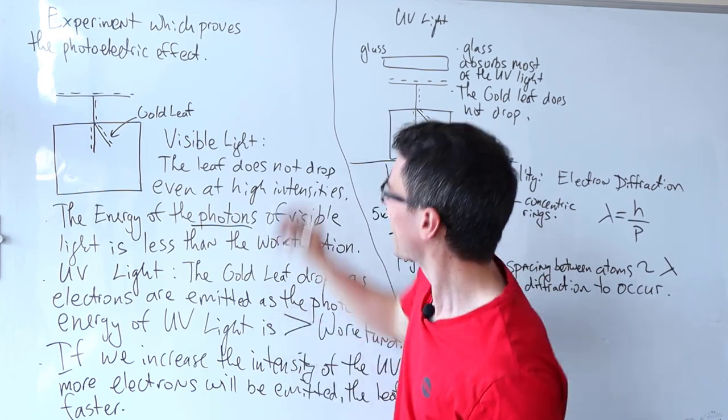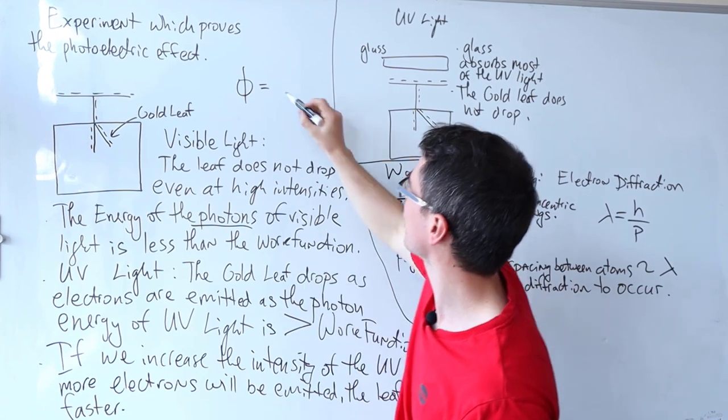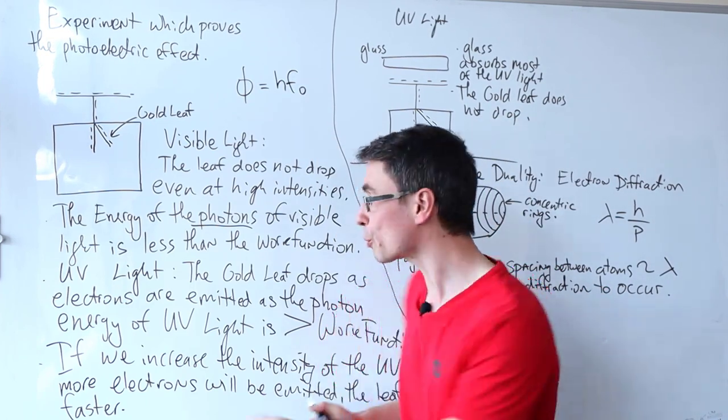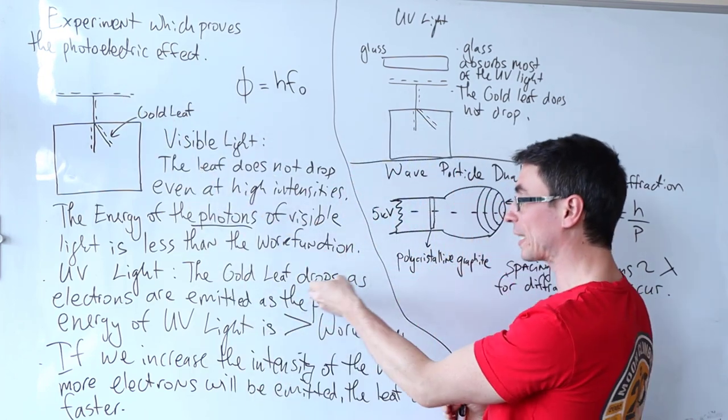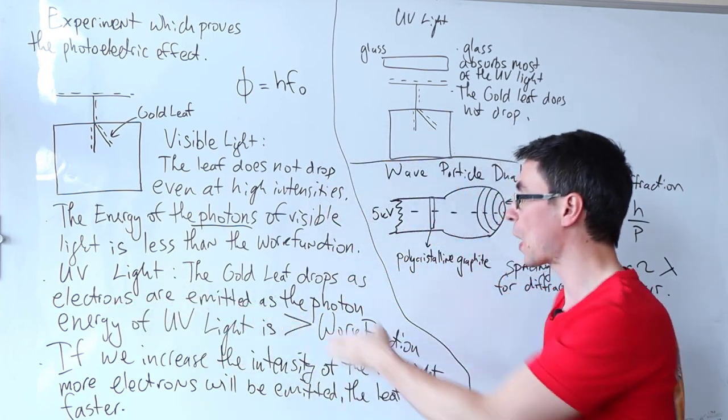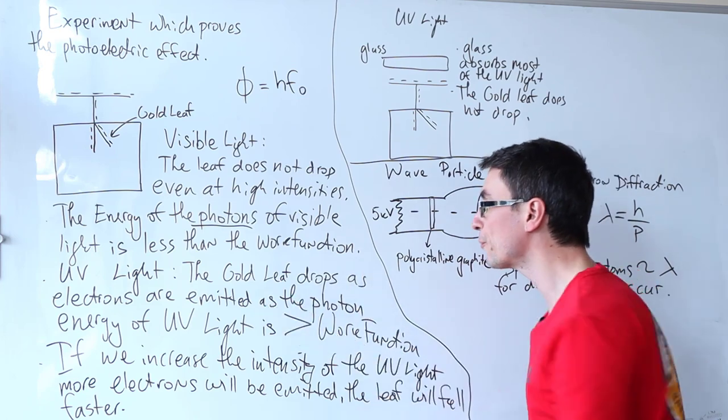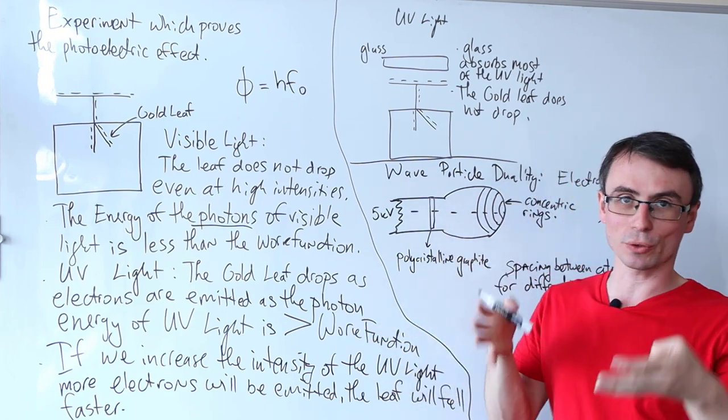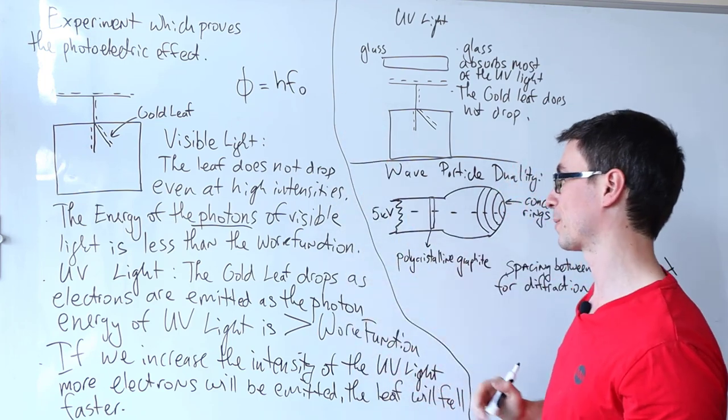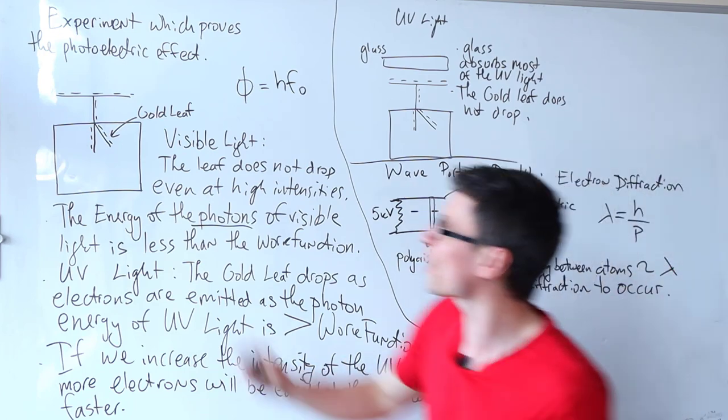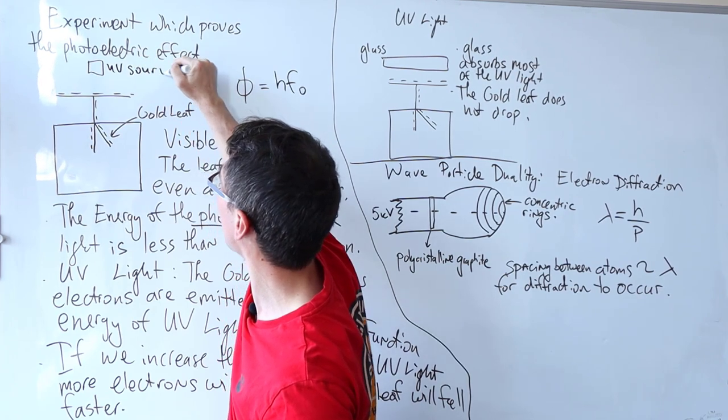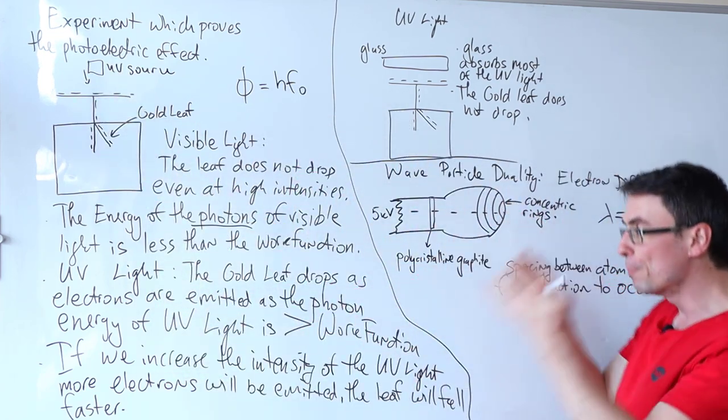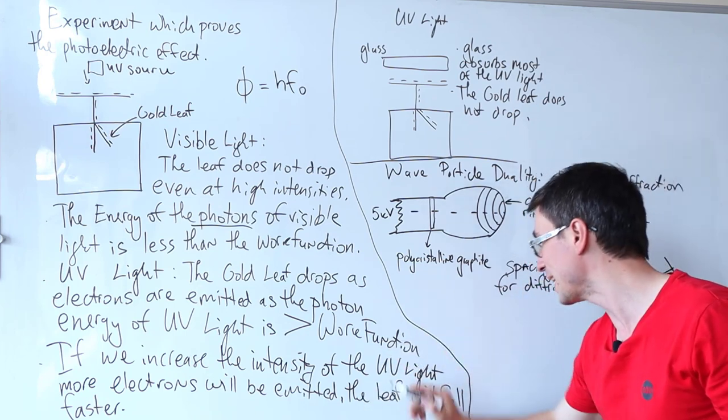Also answer this in terms of threshold frequency, and just remember that the work function is given by energy equal to H Planck's constant multiplied by the threshold frequency. However, if we were to apply UV light directly above this, the gold leaf will drop pretty quickly as electrons are emitted because the energy of the UV photon is greater than the work function. Alternatively, the frequency of UV light or the photons of UV light is greater than the threshold frequency. If we were to increase the intensity of UV light, in practice all this means is that if we had a UV source, all we did is we bring that closer, meaning that more UV photons will strike this surface. If more UV photons strike this surface, this means that more electrons will be emitted and the gold leaf will drop faster.